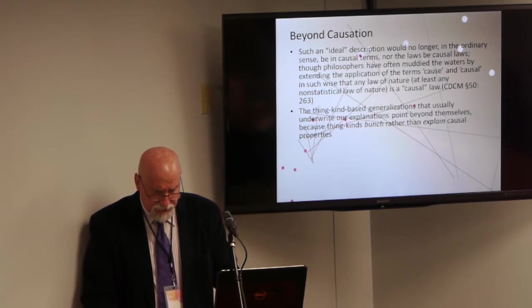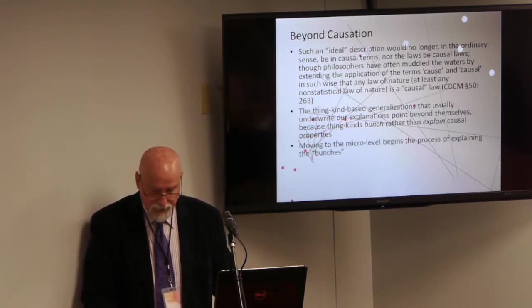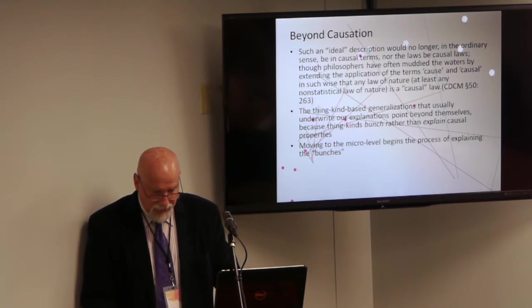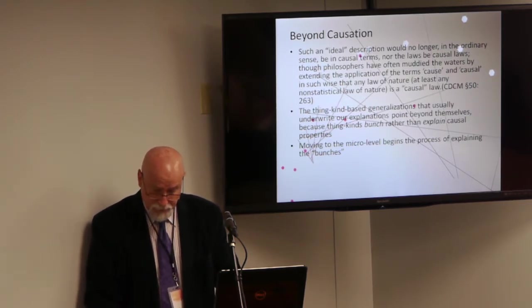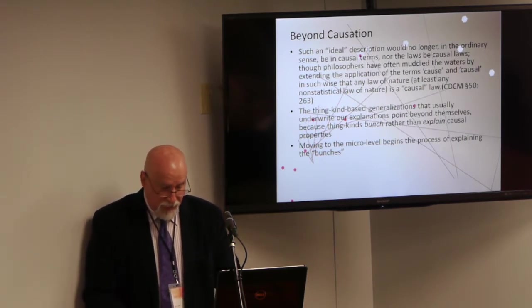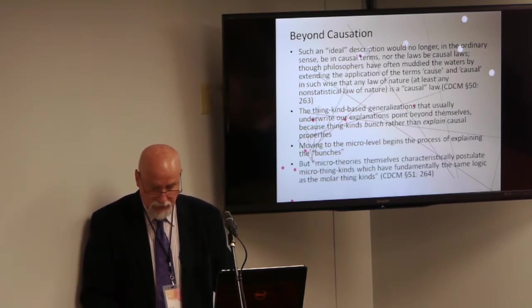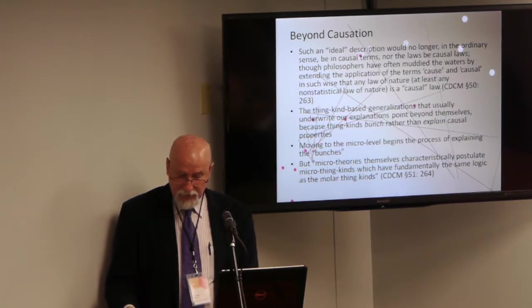The thing-kind based generalizations that usually underwrite our explanations point beyond themselves, because thing-kinds bunch rather than explain causal properties. We must learn to appreciate the promissory note dimension of thing-kinds expressions. We begin to get beyond the framework of manifest causation by moving to the micro level, but we only begin to get beyond it by moving to the micro level, at which many of the causal properties of molar thing-kinds can be explained. We can explain at the micro level why the salt dissolves. But the narrative cannot stop there because, Sellars believes because micro theories themselves characteristically postulate micro thing-kinds, which have fundamentally the same logic as molar thing-kinds. Sellars wants us ultimately to get out of the thing-kind business all together.